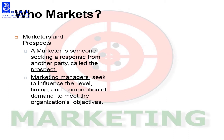Now, who markets? Marketers and prospects. A marketer is the person who seeks a response from another person; that other person is called a prospect — the person who wants to buy things. The person who wants to sell things is the marketer. Marketing managers seek to influence the level, timing, and composition of demand to meet the organization's objectives. Marketing managers plan, combine, organize, and execute things to meet the composition of demand and organizational objectives.